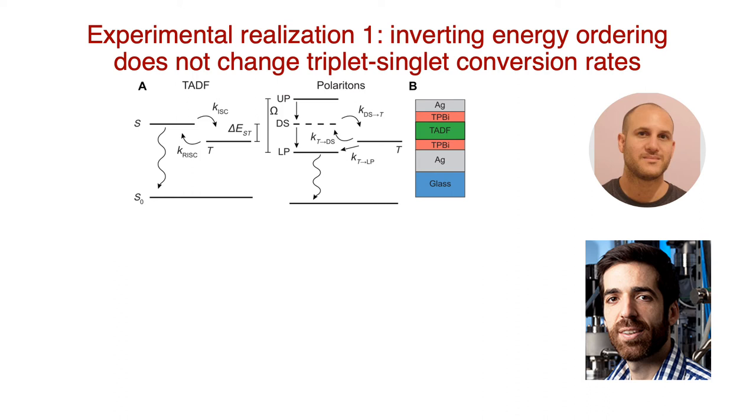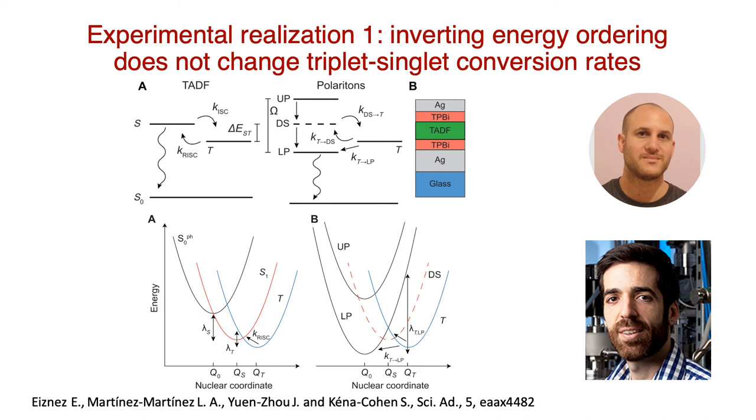And this was actually shown by experiments performed by Elad Eisner and Stefan Kenakwain at Polytechnic University of Montreal. So we carried out the theoretical modeling using our variational approach. And as expected, we observed that the dynamics are governed by the transfer of triplets to dark states. And the transfer of the triplets to the lower polaritons are negligible with respect to the latter.